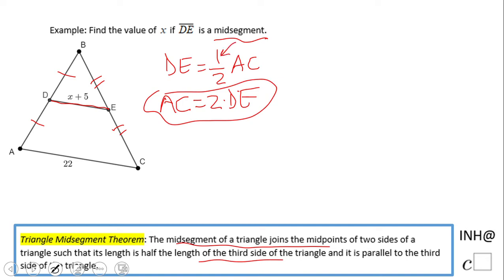In this case, we have AC, which is 22, equals two times x plus five. You have choices here to solve it. I'm going to use distributive property, which I feel most of you are familiar with. Two times x is 2x, two times five is 10. Then subtract 10, and we have 2x equals 12.